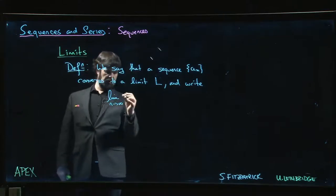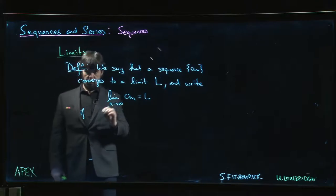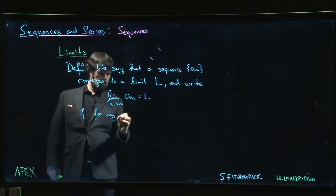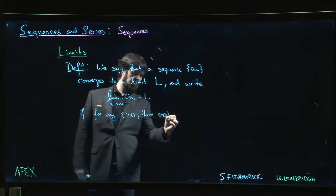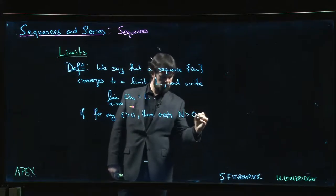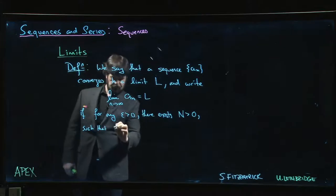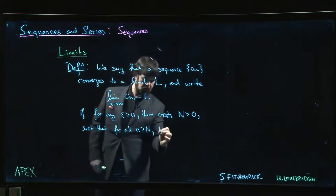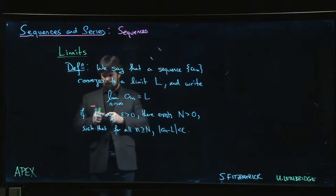So we only look at limits at infinity for sequences. The limit of a_n is equal to L if, the precise definition: if for any positive epsilon there exists a natural number N such that for all n bigger than or equal to that N, the difference between a_n and L is less than epsilon.